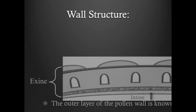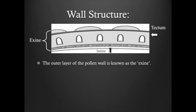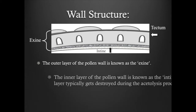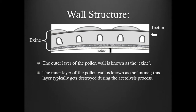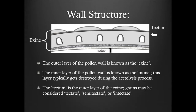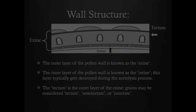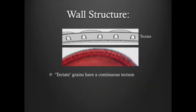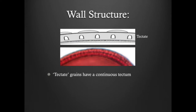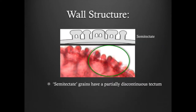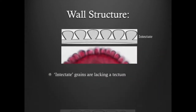Wall structure. The outer layer of the pollen wall is known as the exine. The inner layer of the pollen wall is known as the endine. This layer typically gets destroyed during the acetolysis process. The tectum is the outer layer of the exine. Grains may be considered tectate, semi-tectate, or intectate. Tectate grains have a continuous tectum. Semi-tectate grains have a partially discontinuous tectum. And intectate grains are lacking a tectum.